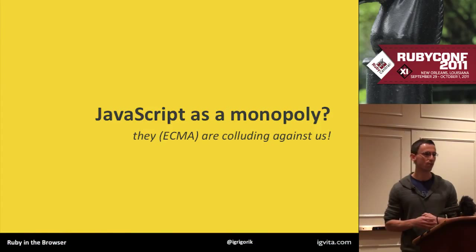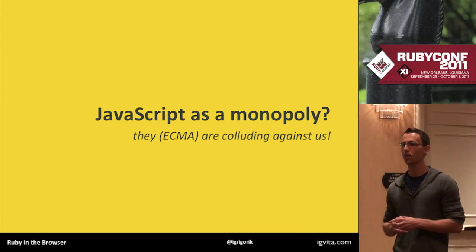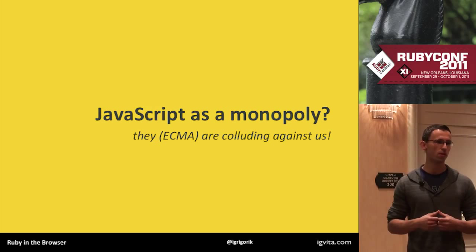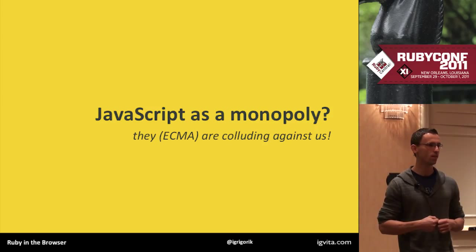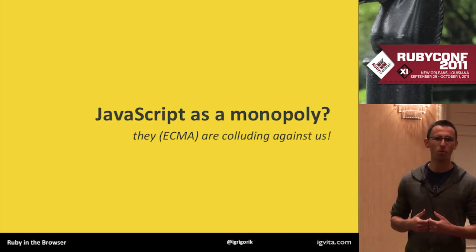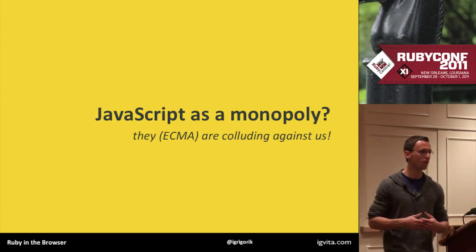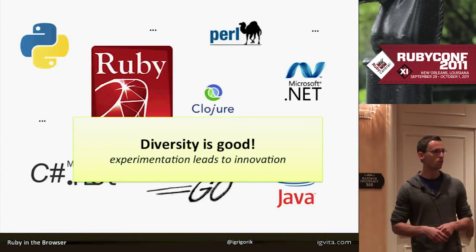I also have this theory that JavaScript is maybe possibly a monopoly. It's actually kind of crazy when you think about the ECMA standards body. Would you ever trust all the major vendors to get together and invent the language and then all of us would have to program to it? Well, that is JavaScript. That is ECMA. And it's kind of crazy. I don't necessarily think JavaScript is bad, but I don't think this is a good position to be in either, because diversity is good. We like many different languages - there's different ideas, different approaches, no one particular solution that is better.